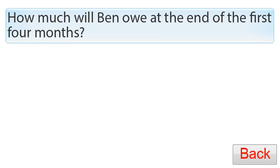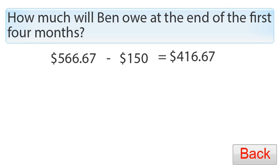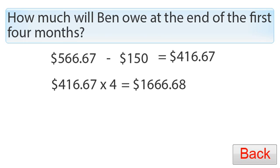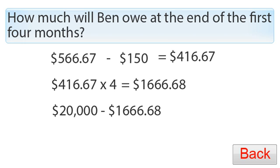To find how much Ben owes at the end of the first four months: his monthly repayment is $566.67, of which $150 goes toward interest, leaving $416.67 per month going toward the principal. Over four months, that's $416.67 times 4 equals $1,666.68 paid off the principal. Subtracting from $20,000 gives a remaining balance of $18,333.32.